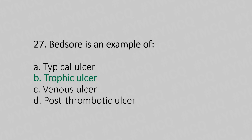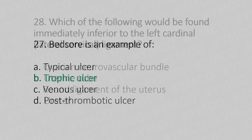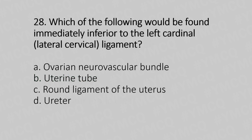Now let's move to question number 28. Which of the following would be found immediately inferior to the left cardinal ligament, or lateral cervical ligament? Option A: ovarian neurovascular bundle. Option B: uterine tube. Option C: round ligament of the uterus. Option D: ureter. And the answer is Option D — ureter.